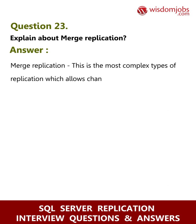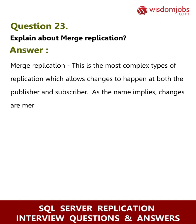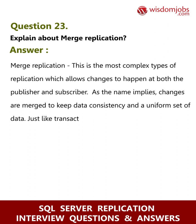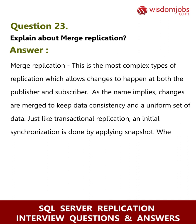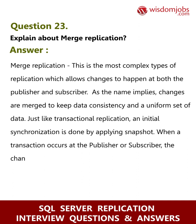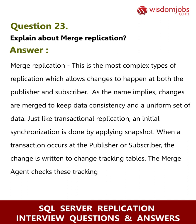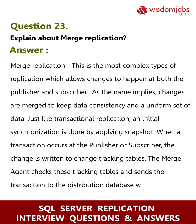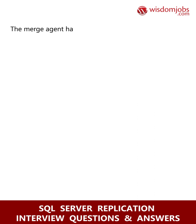Question 23: Explain about merge replication. Answer: Merge replication is the most complex type of replication, which allows changes to happen at both the publisher and subscriber. As the name implies, changes are merged to keep data consistency and a uniform set of data. Just like transactional replication, an initial synchronization is done by applying a snapshot. When a transaction occurs at the publisher or subscriber, the changes are written to a change tracking table, and the merge agent checks these tracking tables and sends the transaction to the distribution database.